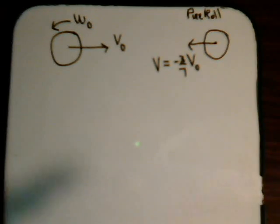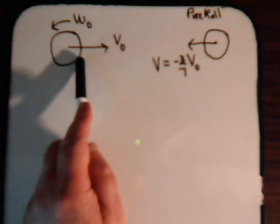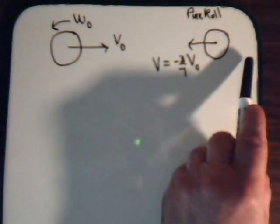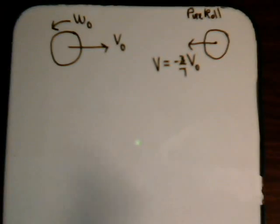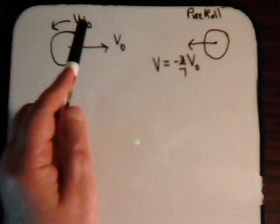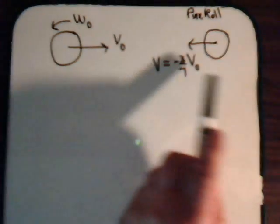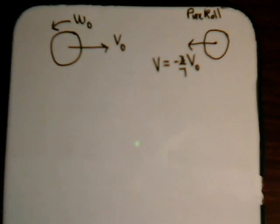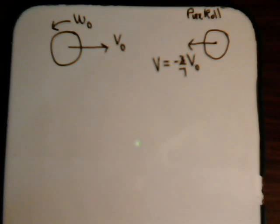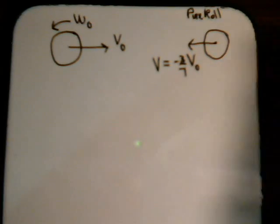Again, we're not explaining why it has this behavior — why it skids along, stops, and then comes back in the reverse direction; that's for another video. What we want to do is get a handle on what would have to be the relationship of Omega-naught and V-naught for this situation to take place. If you've watched this series starting with video number 33, this is exactly what we've done in the previous videos over and over again.